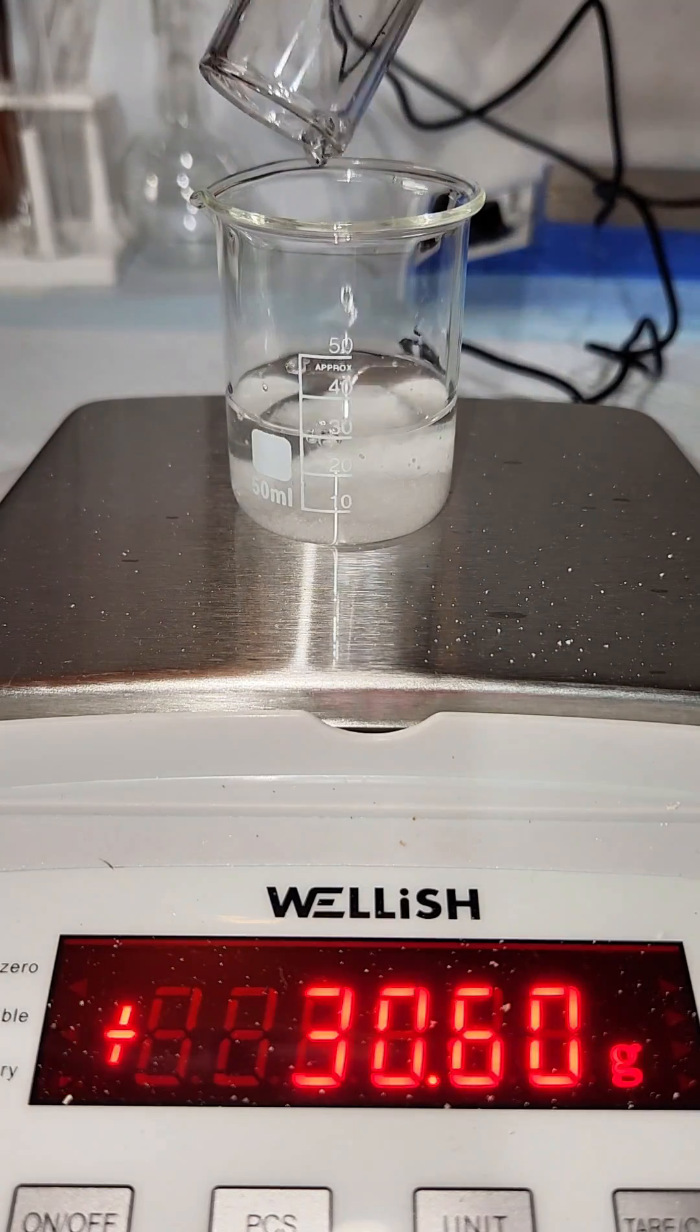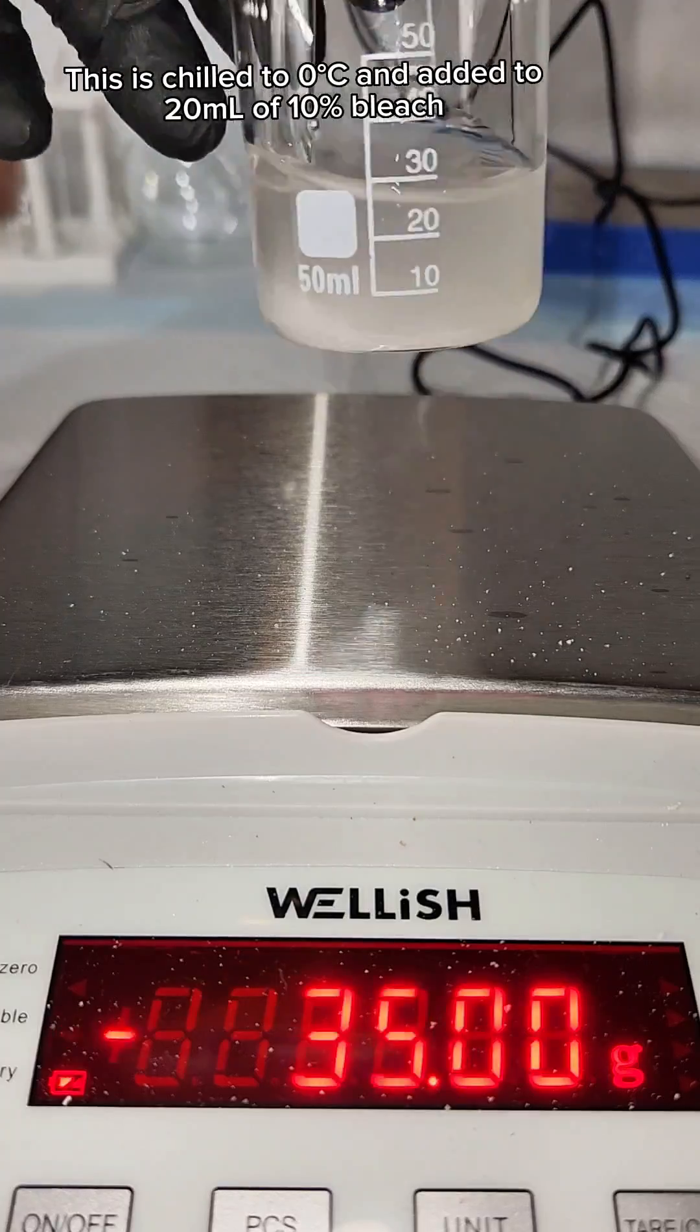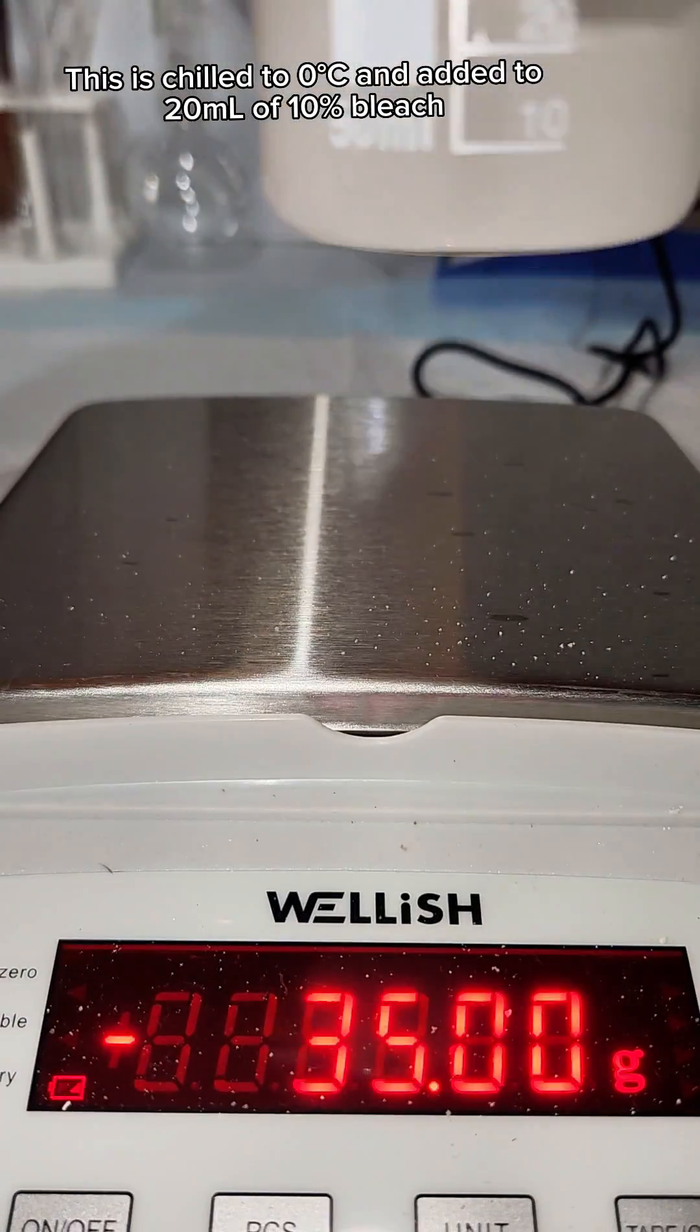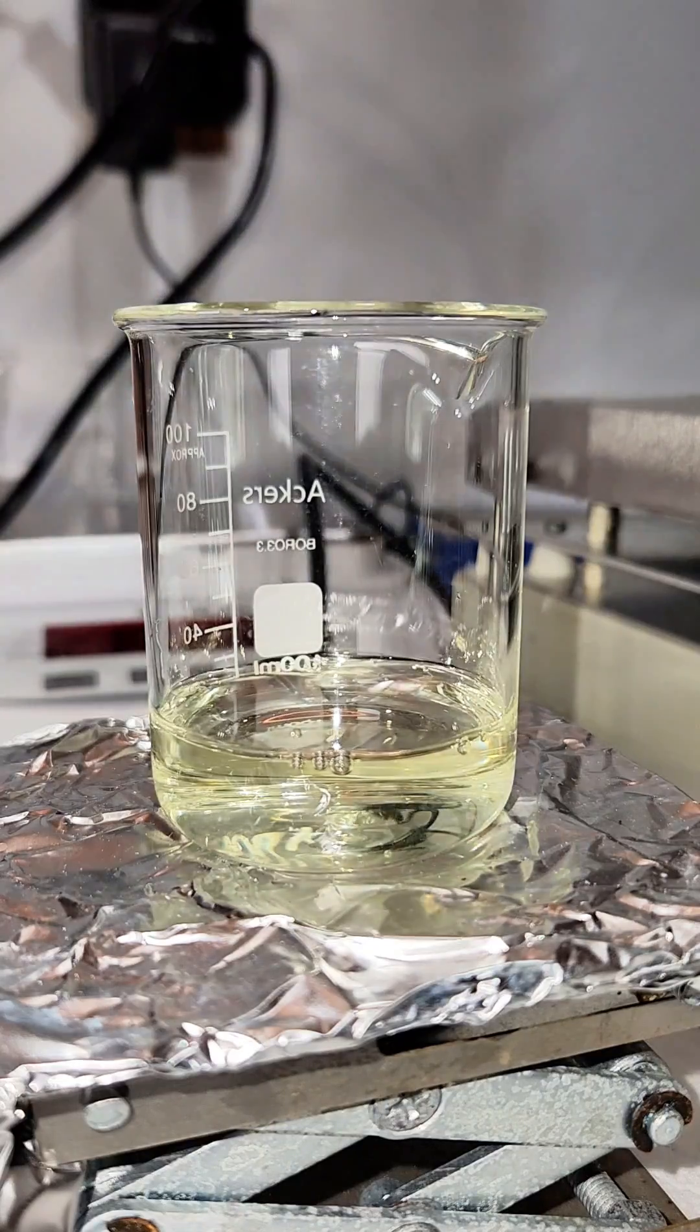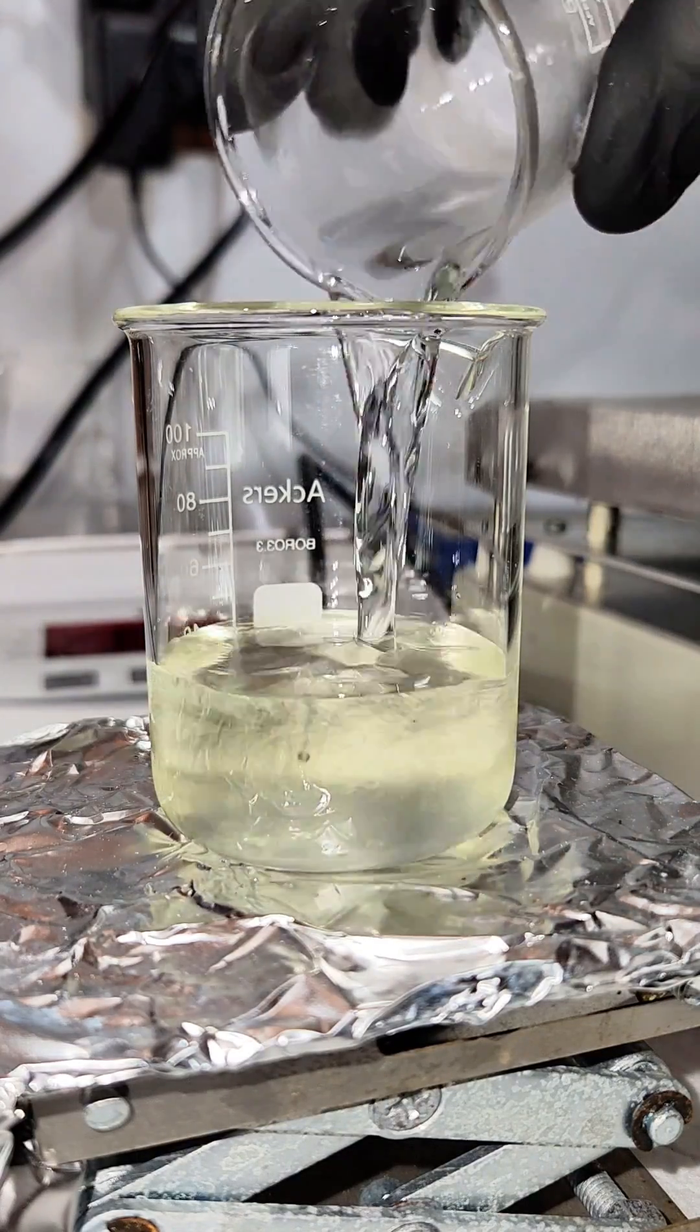The first thing I want to do is dissolve 6 grams of sodium hydroxide in 25 milliliters of distilled water. I then chill this to 0 degrees Celsius and add it to 20 milliliters of 10% sodium hypochlorite bleach solution.